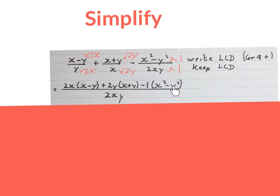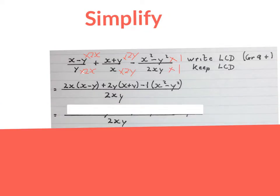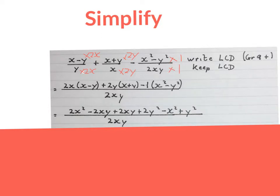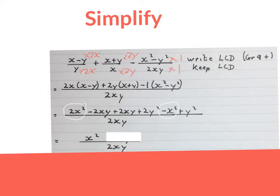You write your LCD again — write the LCD and keep the LCD. Then we simplify the top part by multiplying 2x in, giving us 2x squared minus 2xy. Then we times the plus 2y into the bracket, giving plus 2xy plus 2y squared. Then you times the minus 1 into the bracket, giving minus 2x squared plus y squared.